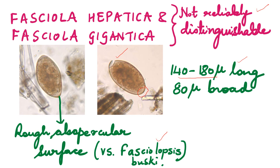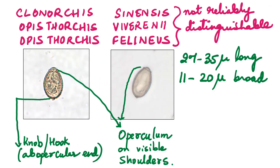The other three liver flukes — Clonorchis sinensis, Opisthorchis viverreni, Opisthorchis felineus — their eggs are relatively very small, almost one-fifth the size of Fasciola eggs. It is very easy to tell this is Fasciola or either Clonorchis or Opisthorchis. Amongst Clonorchis and Opisthorchis, it is very, very difficult to differentiate. They almost look the same.